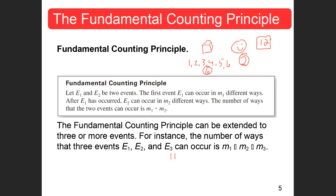So if I wanted to know all the different combinations, the fundamental counting principle says to multiply the number of ways the first event can happen by the number of ways the second event can happen — that gives 12 different combinations. I could write them all out: 1-head, 1-tail, 2-heads, 2-tails, 3-heads, 3-tails, 4-head, 4-tail, 5-head, 5-tail, 6-head, 6-tail. There are 12 different combinations.